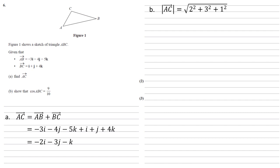The length of AC is equal to the square root of the sum of the squares of the i, j and k components of the vector. Note that I've put positive 2, 3, and 1 in here rather than the negatives of AC, but the square of a negative is exactly the same as the square of a positive. So the length of AC is equal to the square root of 2 squared plus 3 squared plus 1 squared, which is root 14.